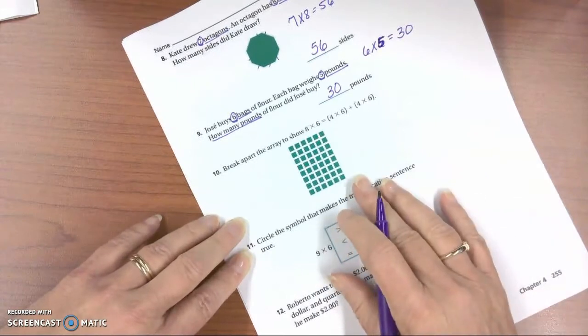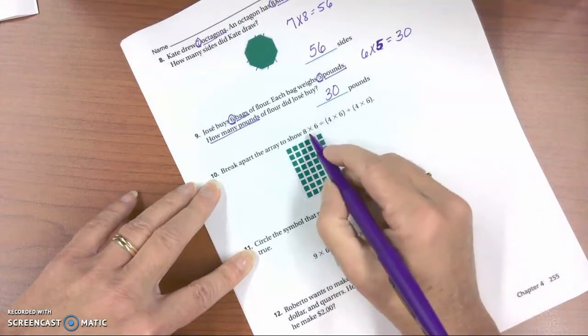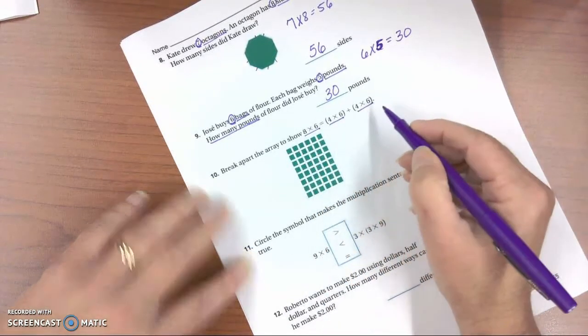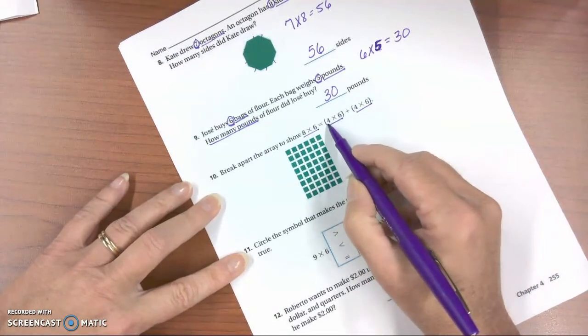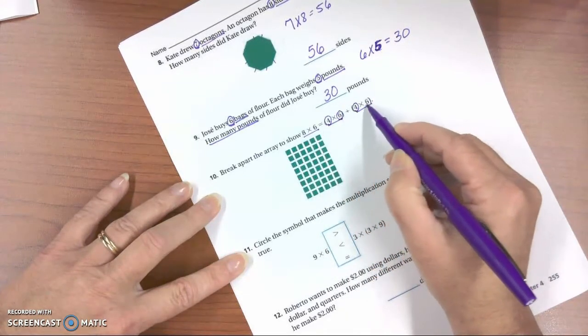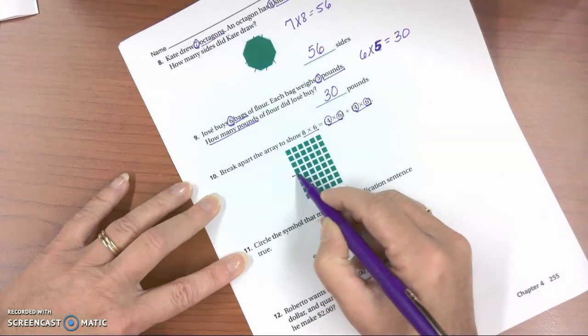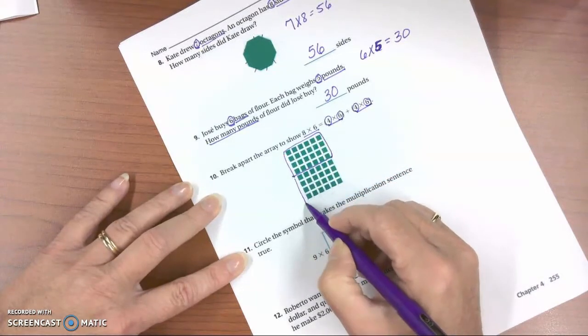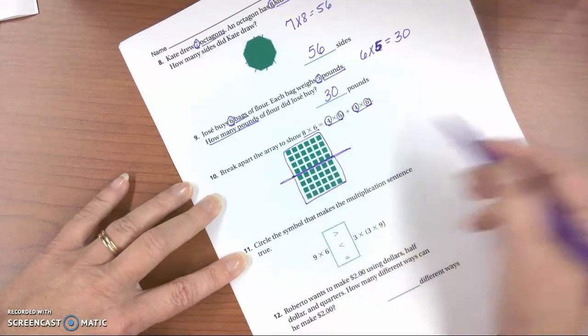The next one wants you to use the distributive property. It says break apart the array to show 8 times 6 is 4 times 6 plus 4 times 6. And remember that when we have 4 times 6, we want 4 rows of 6. And here we also want 4 rows of 6. So 1, 2, 3, 4 rows of 6. There's that group, and here's 4 rows of 6. You can just draw your line right there, however you want to do it.